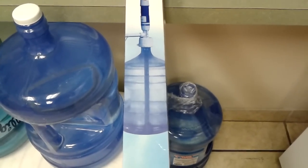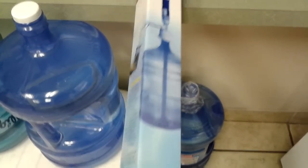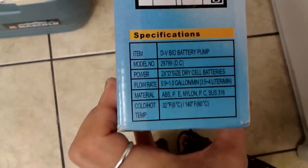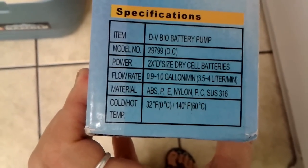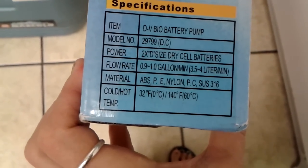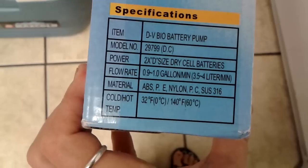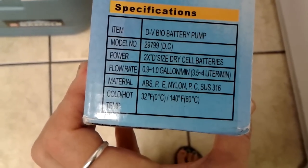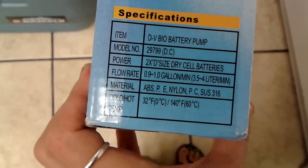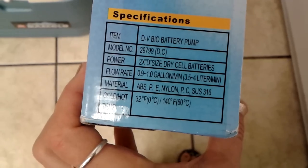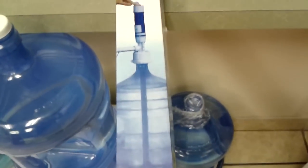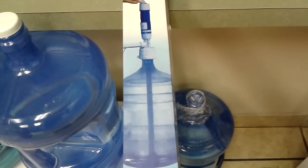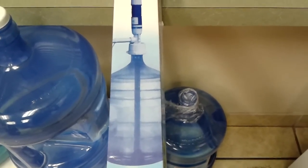There's many of these. I actually think they're all the same one. This one in particular is model 29799. It uses two D-cell batteries and the flow rate is 0.9 to 1 gallon per minute. It handles cold and hot temperatures, and they do say it's not just for water - it could be for various liquid beverages and so forth.